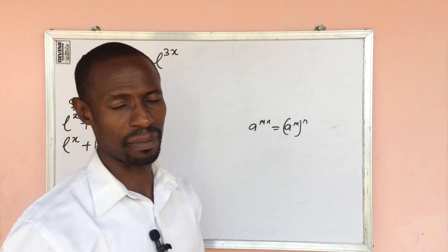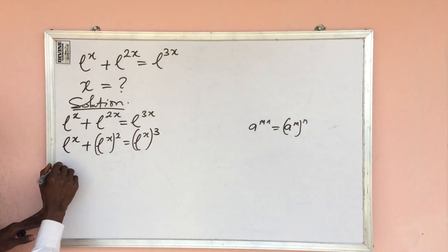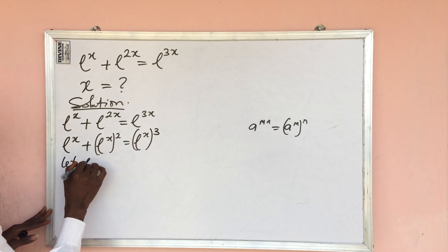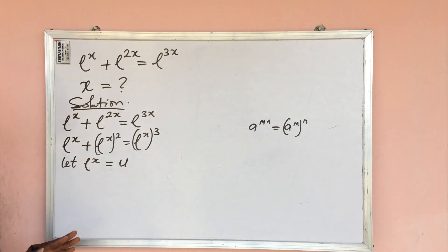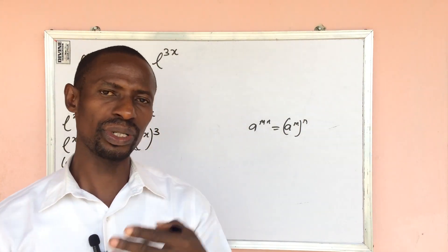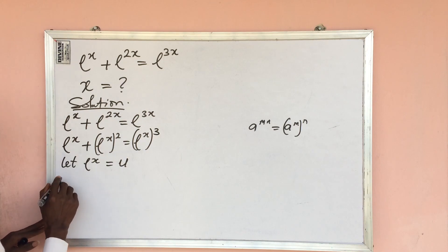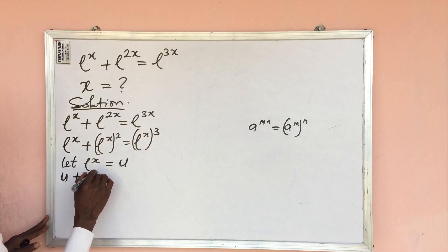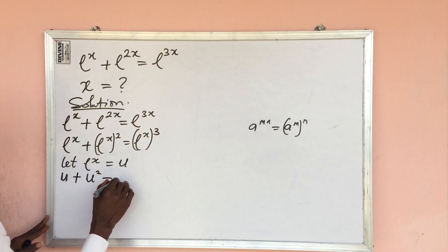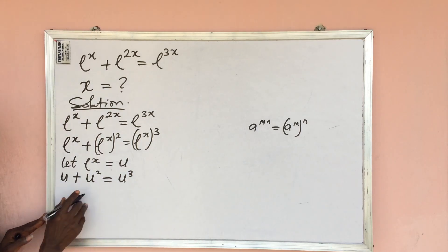At this point we can introduce a substitution. Let e to the power of x equal to u. So wherever we see e to the power of x, we put u. This expression becomes u plus u squared equal to u cubed.